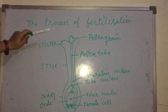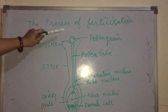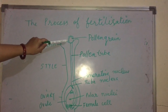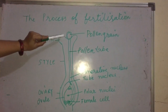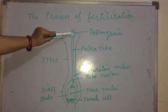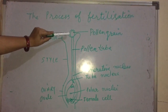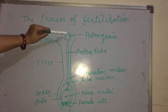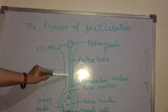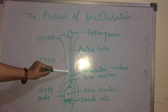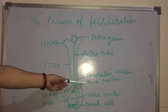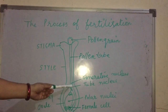Now the process of pollination has taken place. The pollen grain has landed on the stigma of the flower. Once the pollen grain is transferred to the stigma, it starts swelling up by absorbing nutrients and water and it forms a pollen tube. The pollen tube grows through the style. It contains two types of nucleus: tube nucleus and generative nucleus.